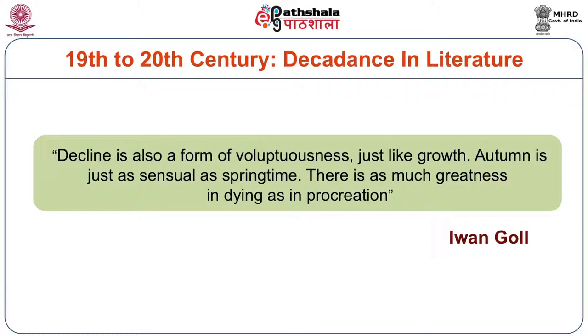When we look at the 20th century, the first thing that comes to mind is decadence — decadence in literature, which takes you back to the 19th century and this classic book by Walter Pater published in 1885 titled Renaissance. I would like to read to you one line from Evan Gold who talks about decadence: 'Decline is also a form of voluptuousness just like growth. Autumn is just as sensual as springtime. There is as much greatness in dying as in procreation.'